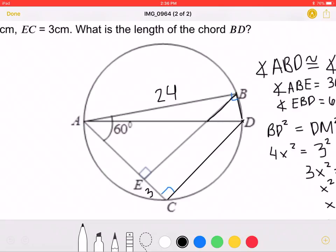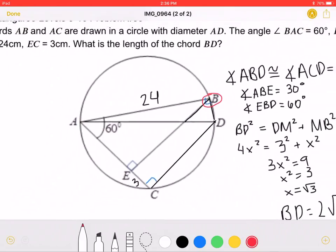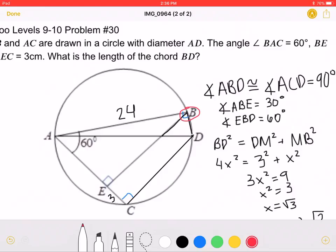Since AD is the diameter of the circle, angle ABD must be equal to 90 degrees, and angle ACD must be equal to 90 degrees.